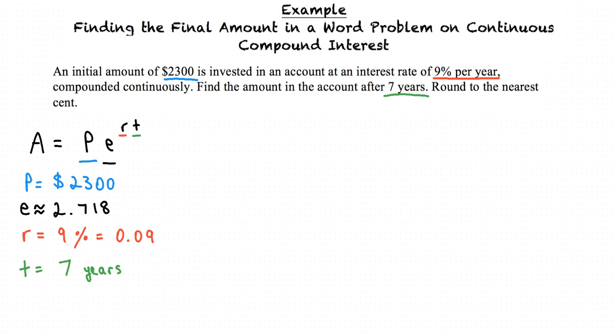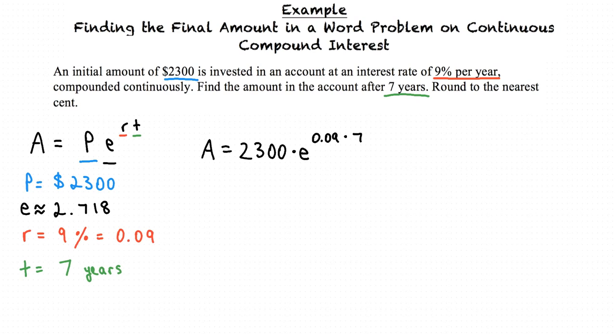Remember, our goal is to find the final amount A, and to do this we plug in our values into the equation. Plugging in our values we have A equals our initial amount 2300 times e to the power of our rate 0.09 times time 7 years.